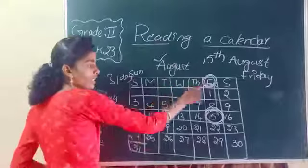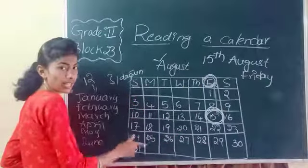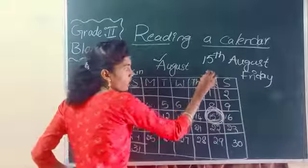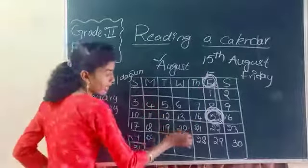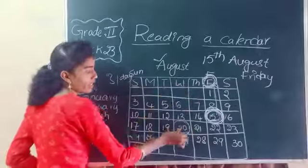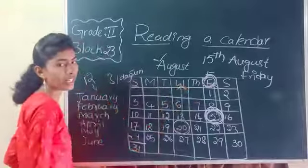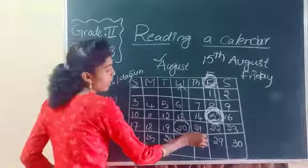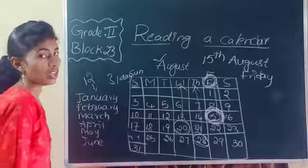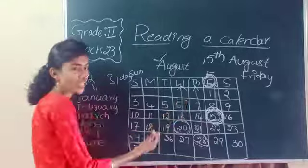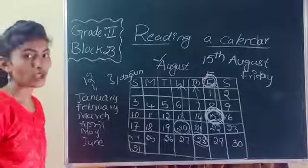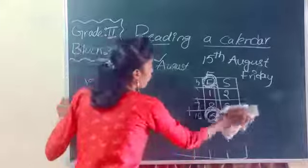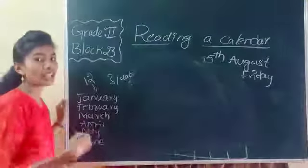Have you understood how to find the days and weeks in a month, in a year? So like this you have to see: if you want to find the 15th day, August 15th which day it is — you see the day name. It is Friday. 20th August falls on W, so it is Wednesday. August 28th falls on Thursday.